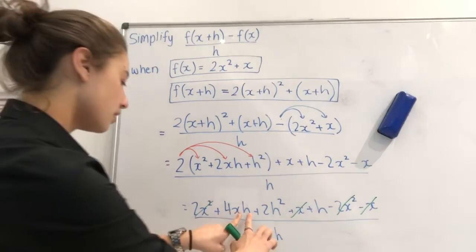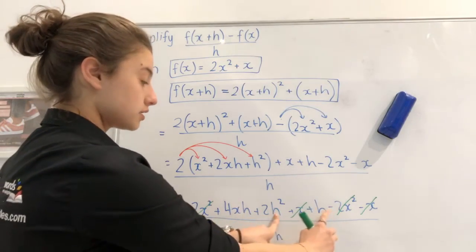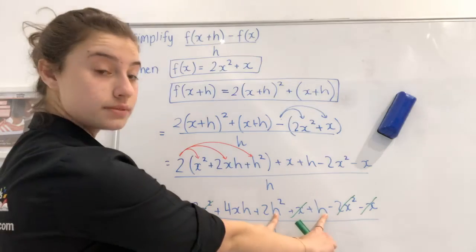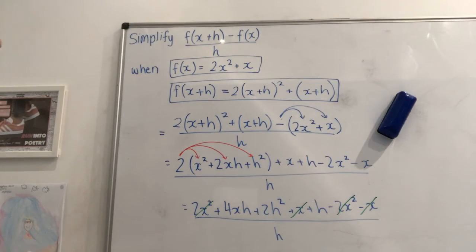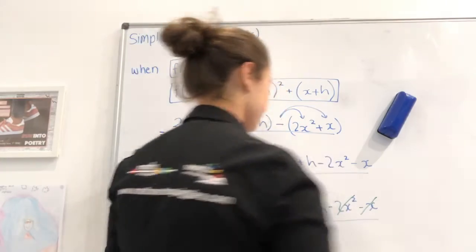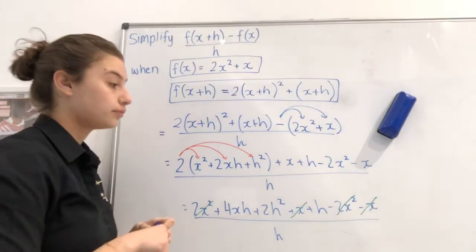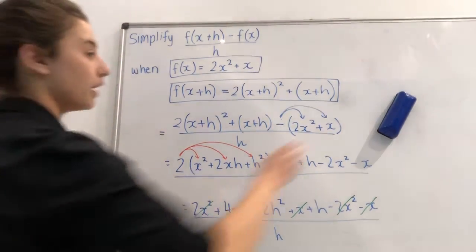Looking at it now, nothing else has an xh in the top. So we know that h squared and h are not like terms. So we can't do anything with those. Now let's rewrite what we have to make this look a little bit nicer. Now you've copied up all of this, haven't you? Awesome. So I'm going to rub off the top half so we can continue.